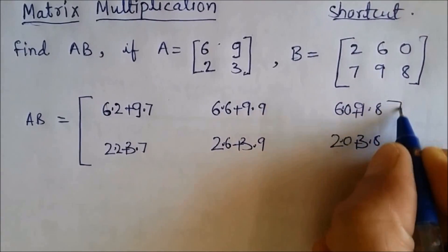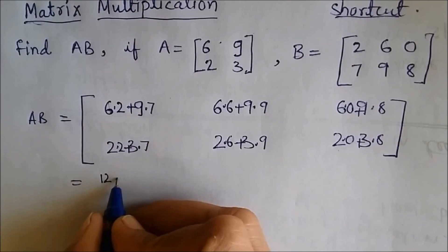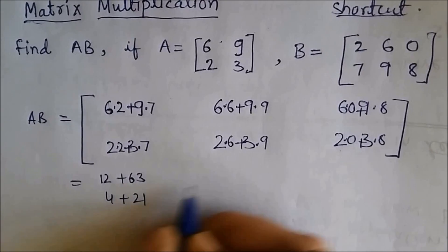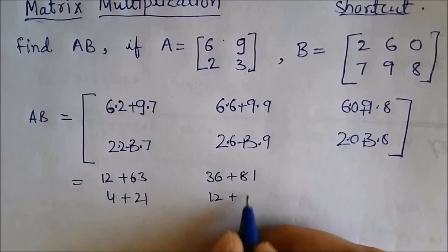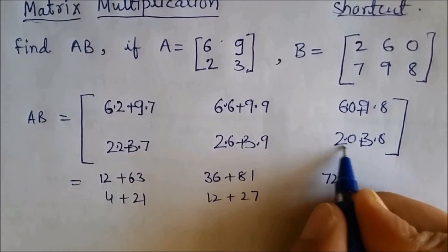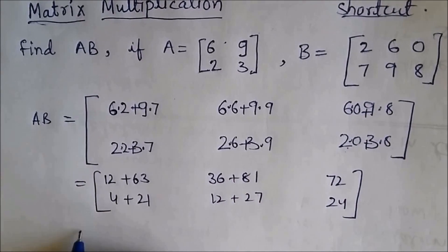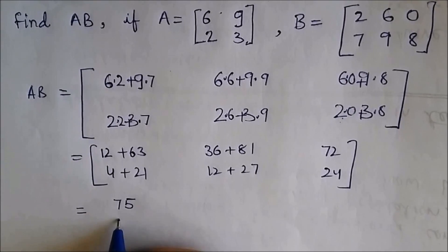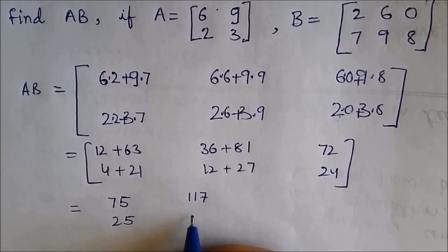Now I evaluate: 6 twos are 12, 9 sevens are 63; 2 twos are 4, 7 threes are 21; 6 sixes are 36, 9 nines are 81; 6 twos are 12, 9 threes are 27; 6 into 0 is 0, 8 nines are 72; 2 into 0 is 0, 8 threes are 24. Then summing: 12 + 63 = 75, 4 + 21 = 25, 36 + 81 = 117.